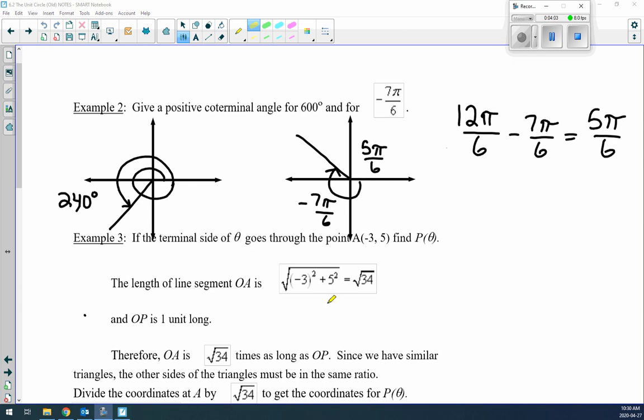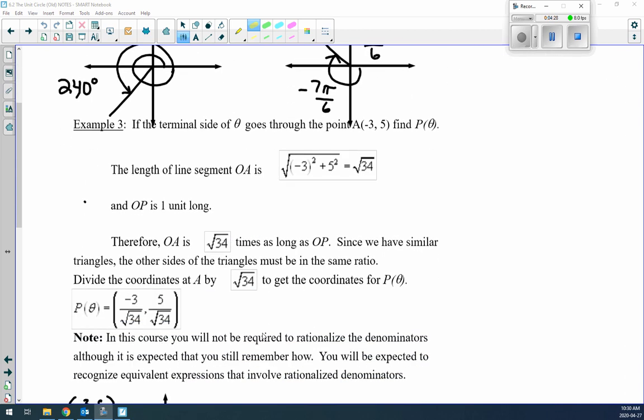Example 3: What if they give you the terminal arm that goes through point A, which is (-3, 5)? Think about where (-3, 5) is—negative 3 on the x-axis and then 5, so that's in quadrant 2. That's our X and our Y. What we want to know is, what is R, the length of that line? We can use the Pythagorean theorem: (-3)² + 5² = 34. You can leave it in radical form—that's more accurate. So we know it's √34.